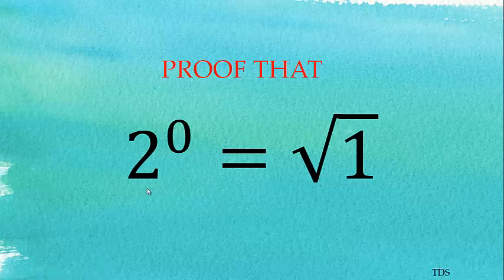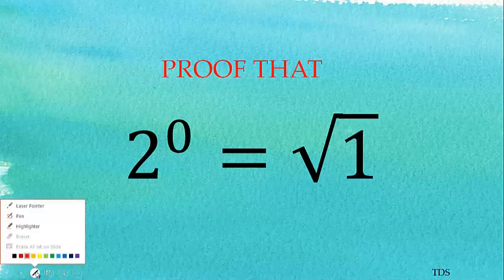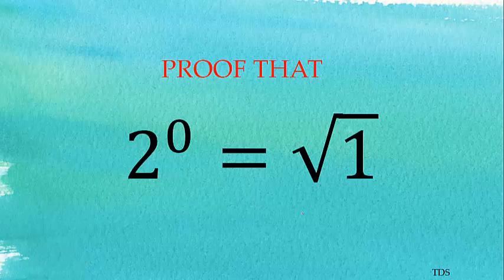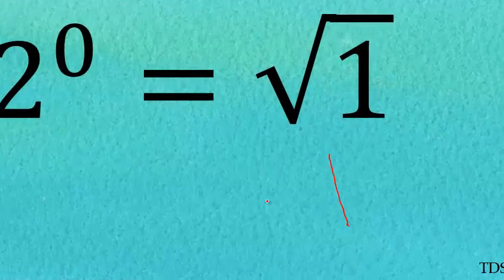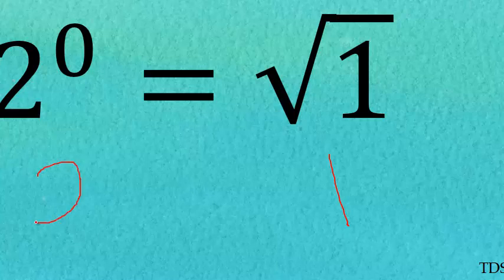Now we are going to prove that any number to the power zero equals one. We know that the square root of one is one, so this is the same as proving that two to the power zero equals one.